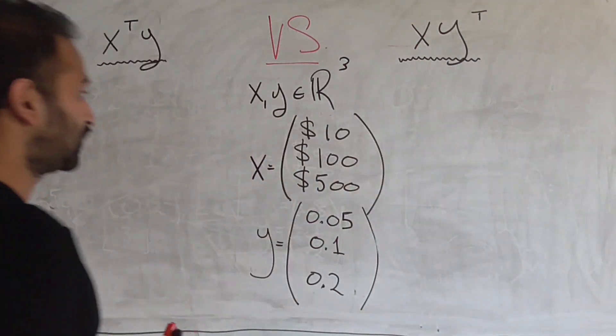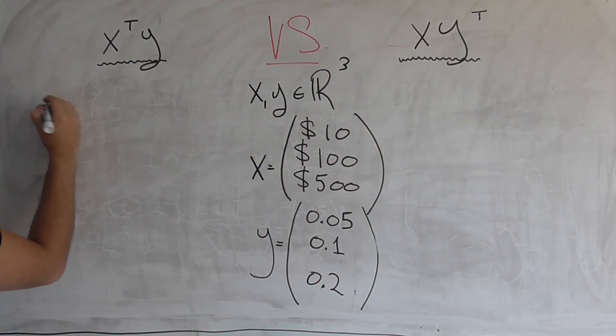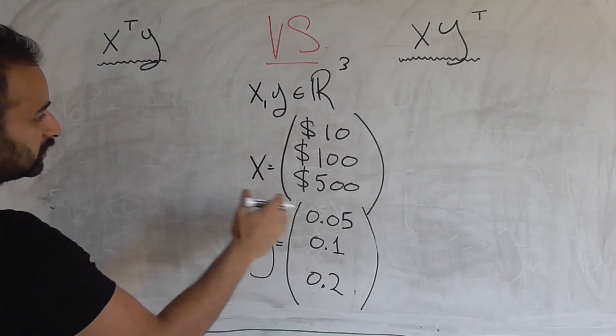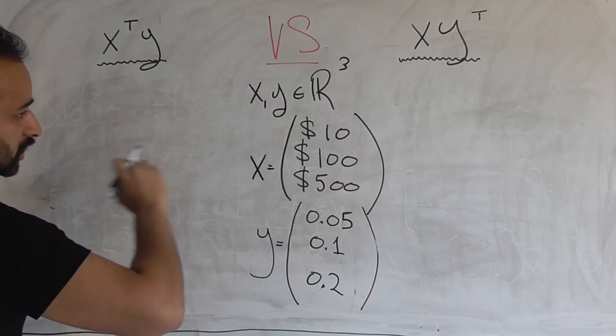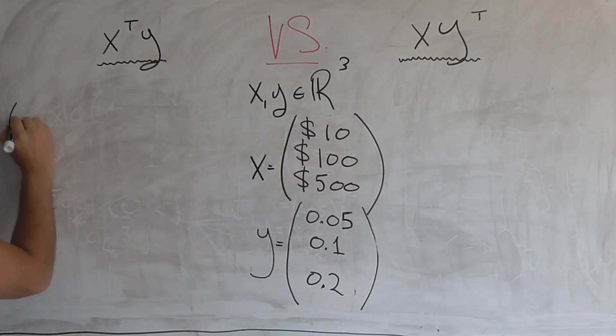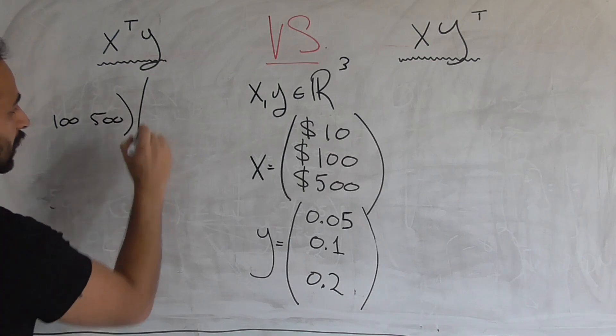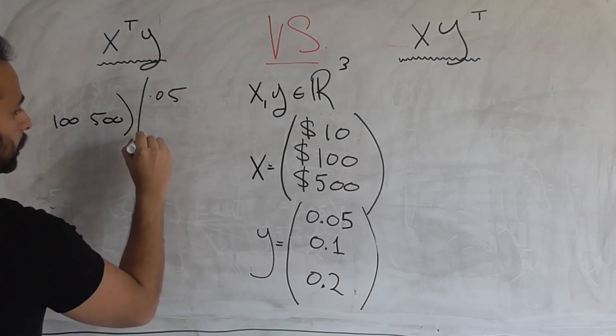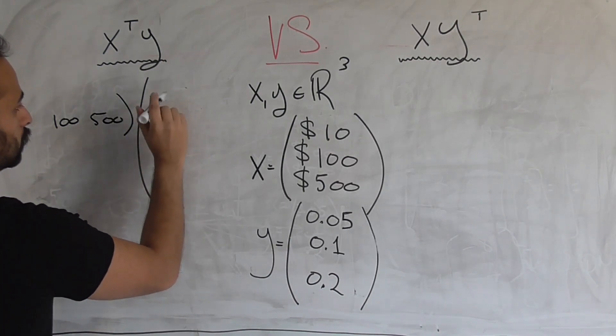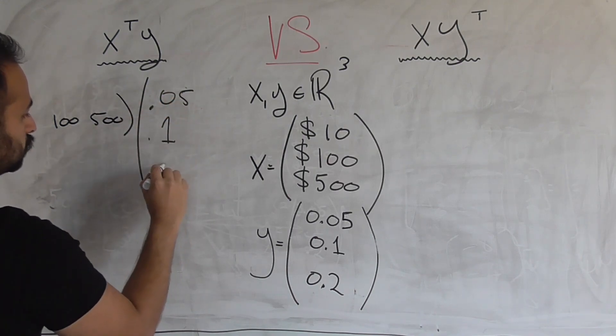So first let's write out what x transpose y looks like. So that's going to be, x transpose is going to be taking this column vector and transforming it into a row vector. So 10, 100, 500, that's x transpose, and then y remains. So 0.05, 0.1, and 0.2.